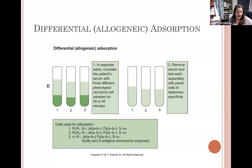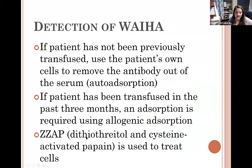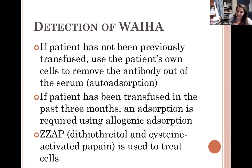One important note about ZZAP: it combines DTT and enzyme. Remember — DTT destroys the Kell antigen site. So during auto absorption procedures, if the patient has an allo-Kell antibody, we will not be able to identify it because the Kell antigen site is destroyed. Blood bank gets around this by providing Kell-negative units for transfusion when DTT is used in the absorption process, since DTT is known to destroy the Kell antigen.